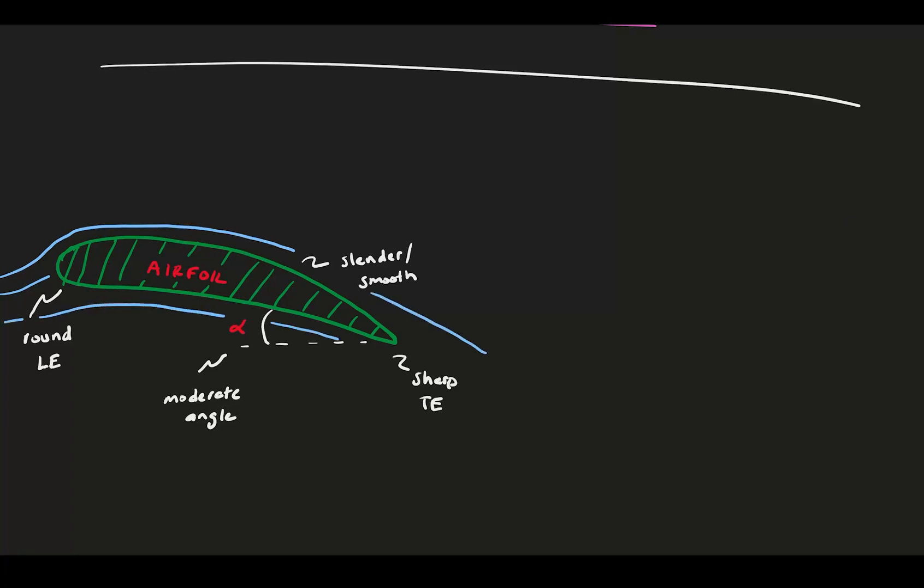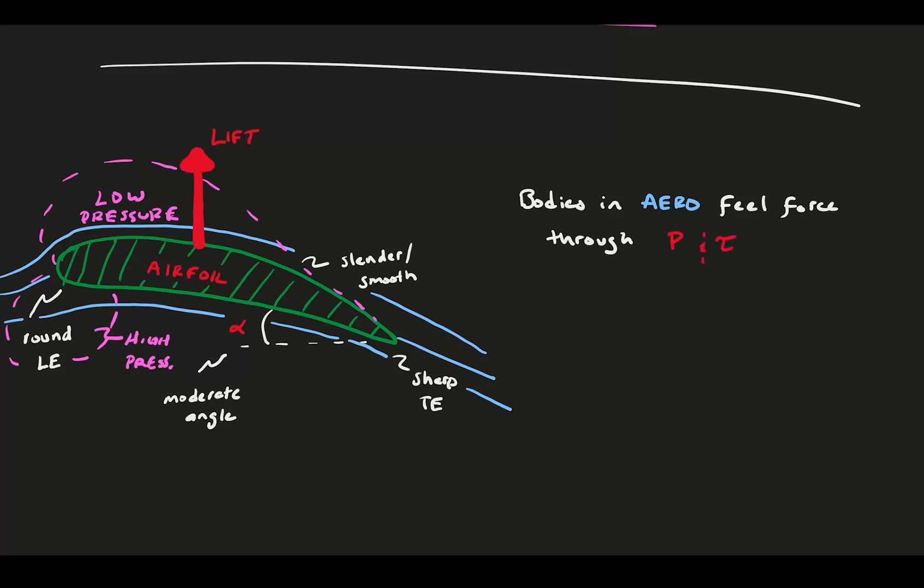Flow passes over the foil and bends around it. On the top of the foil, there is a large, low pressure region, and near the nose, there is commonly a smaller, high pressure region. This low pressure region is what produces lift force. Recall that the only two ways a body in aerodynamics can feel force is through pressure and shear. Here we have a pressure, specifically a pressure difference, on the top and bottom of the foil, and that creates force on our body. This force is lift.